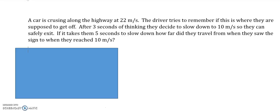So here's our scenario. We've got a car cruising along the highway at 22 meters per second. The driver tries to remember if this is where they're supposed to get off. After three seconds of thinking about it, they decide to slow down to 10 meters per second so they can safely exit the highway. If it takes them five seconds to slow down, how far do they travel from when they saw the sign to when they reached 10 meters per second?